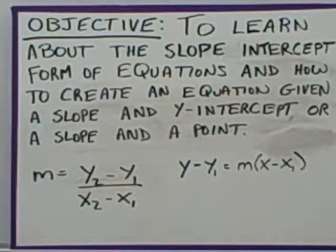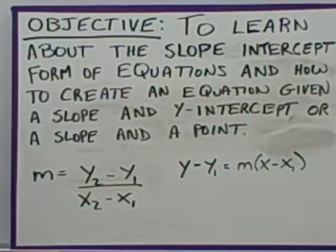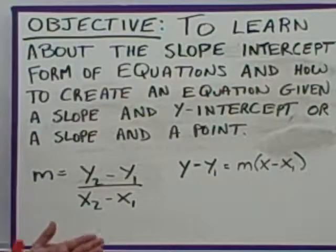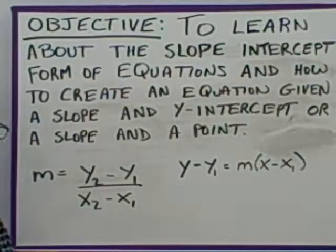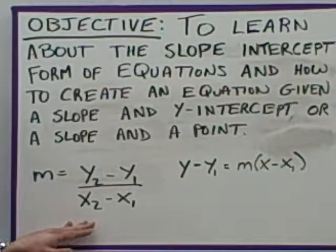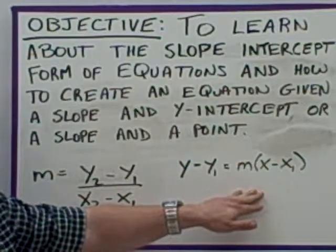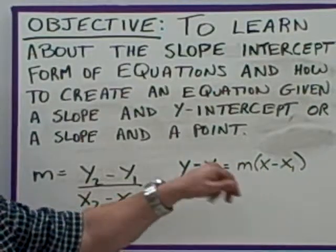The objective of this video is to learn about the slope-intercept form of equations and how to create an equation given a slope and y-intercept or a slope and a point. We're also going to talk about how to identify the slope and intercept from the equation. In order to understand this video, you need a good understanding of the slope formula, and it wouldn't hurt to understand the point-slope form of equations.